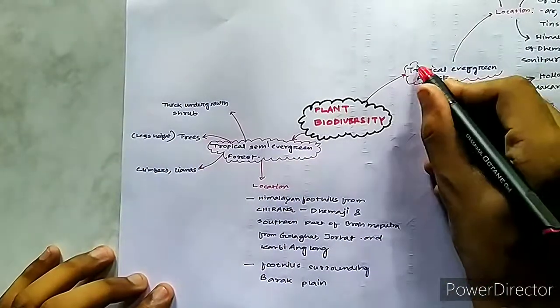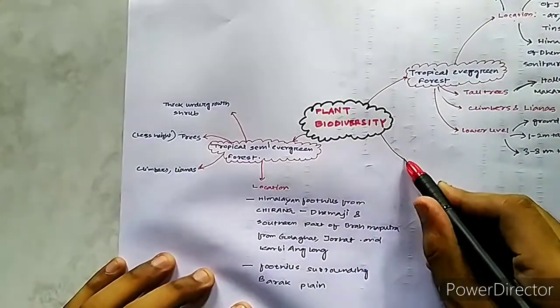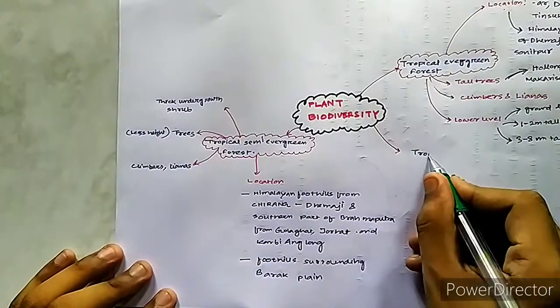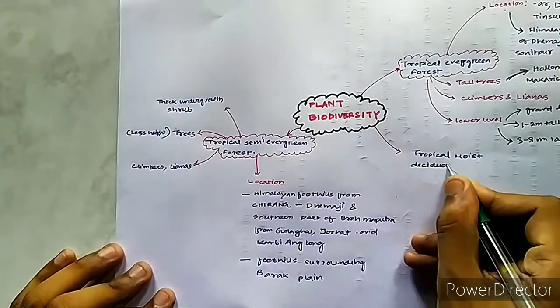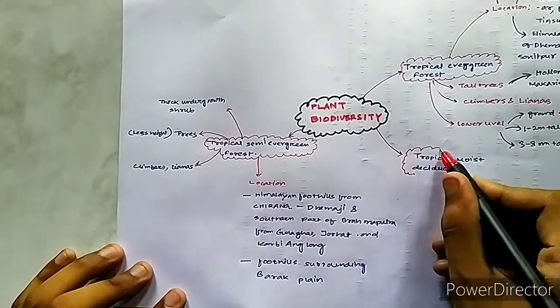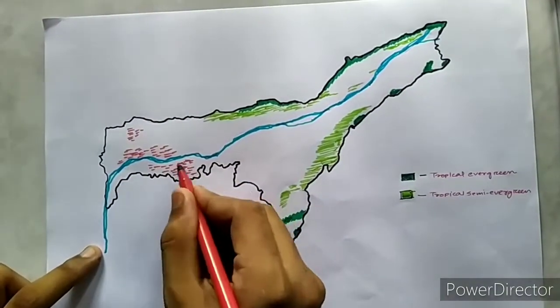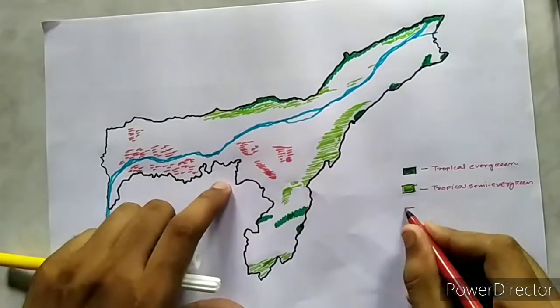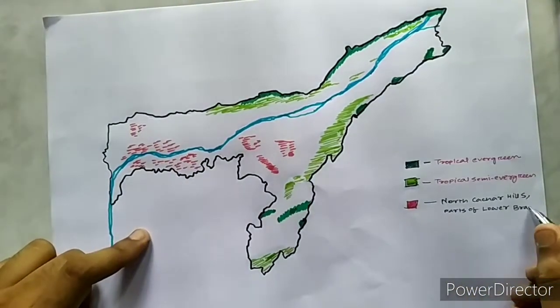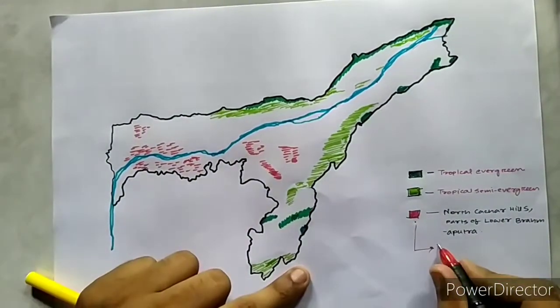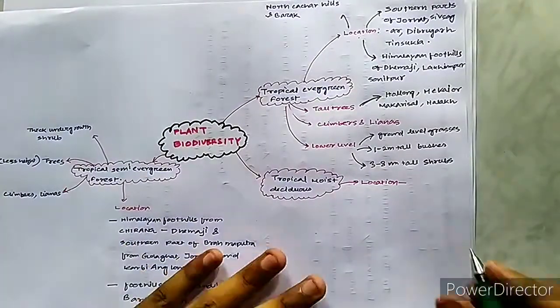The next zone is the moist deciduous forest. This is mostly occurring in lower Brahmaputra Valley and the parts of Karbi Anglong and North Cachar Hills. It is mostly spread over the entire region and it supports reptiles, birds, monkeys, tigers, elephants, barking deer, and the undergrowth is not very thick in this region. The common tree species of this forest are Sal,